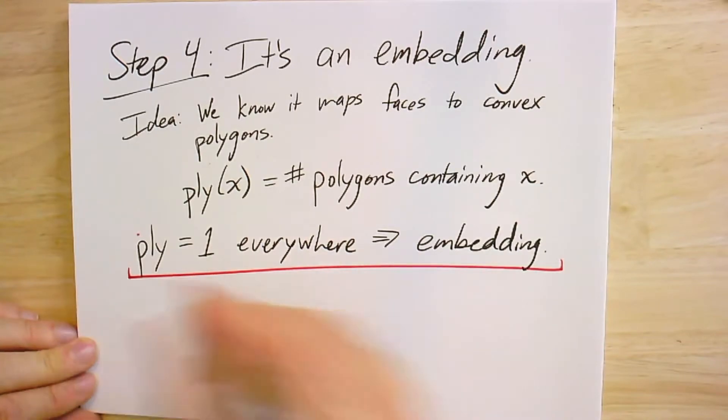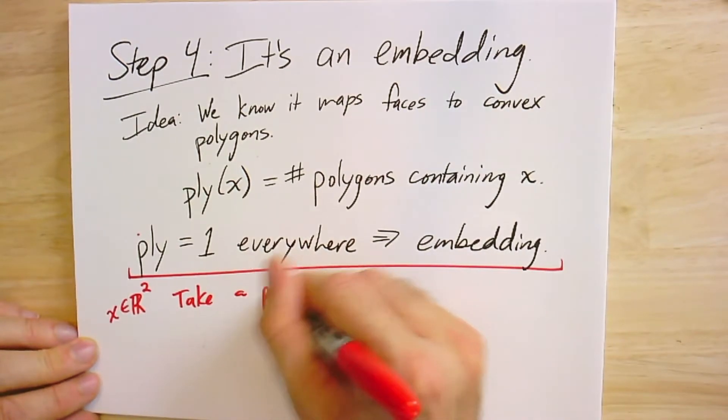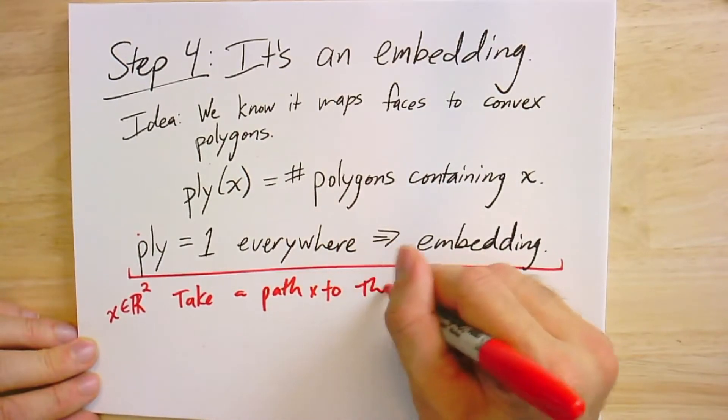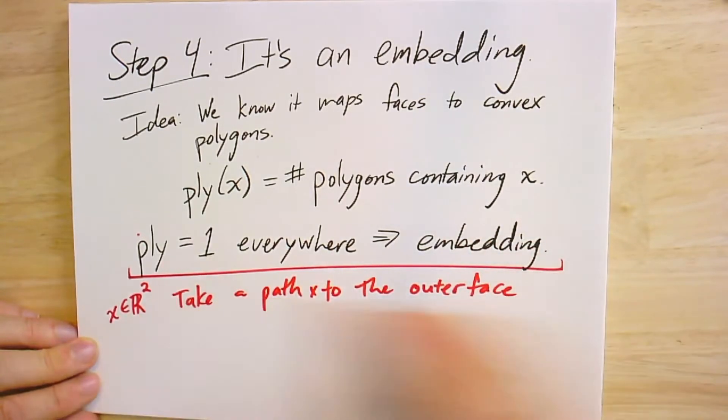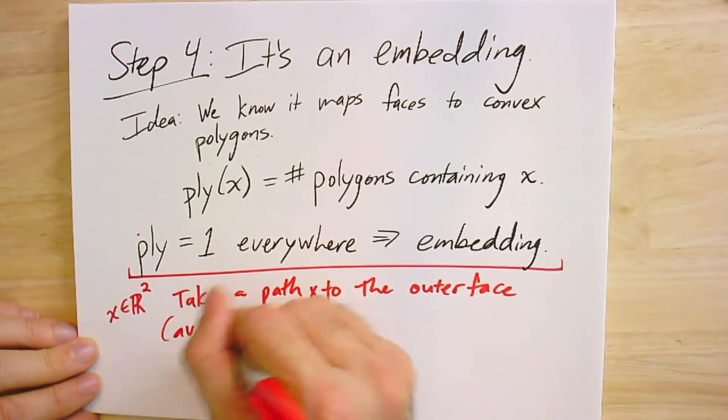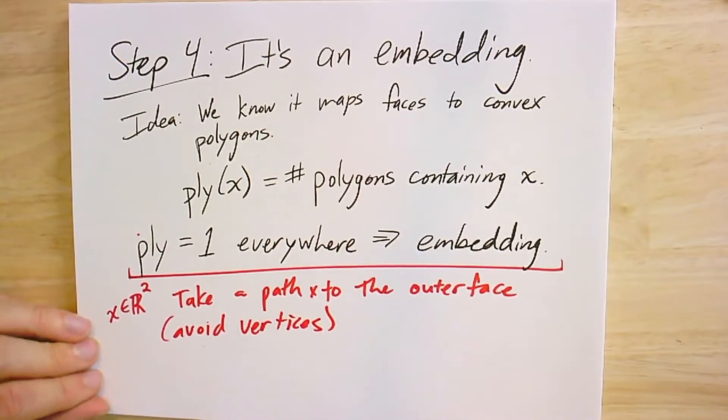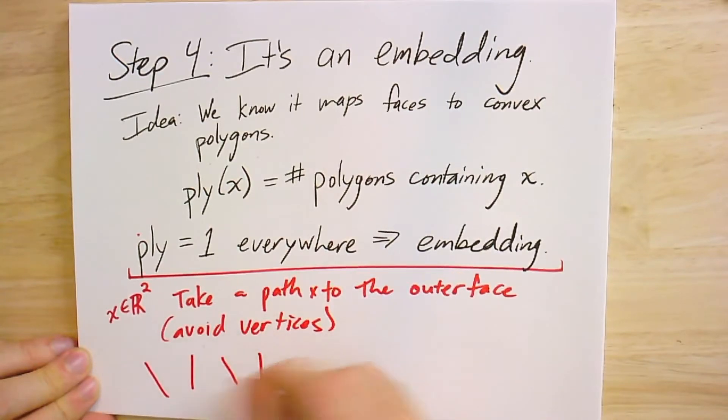Take any point x in the plane. We're going to take a path from x to the outer face, avoiding vertices to make it simple. Now what happens with this path?